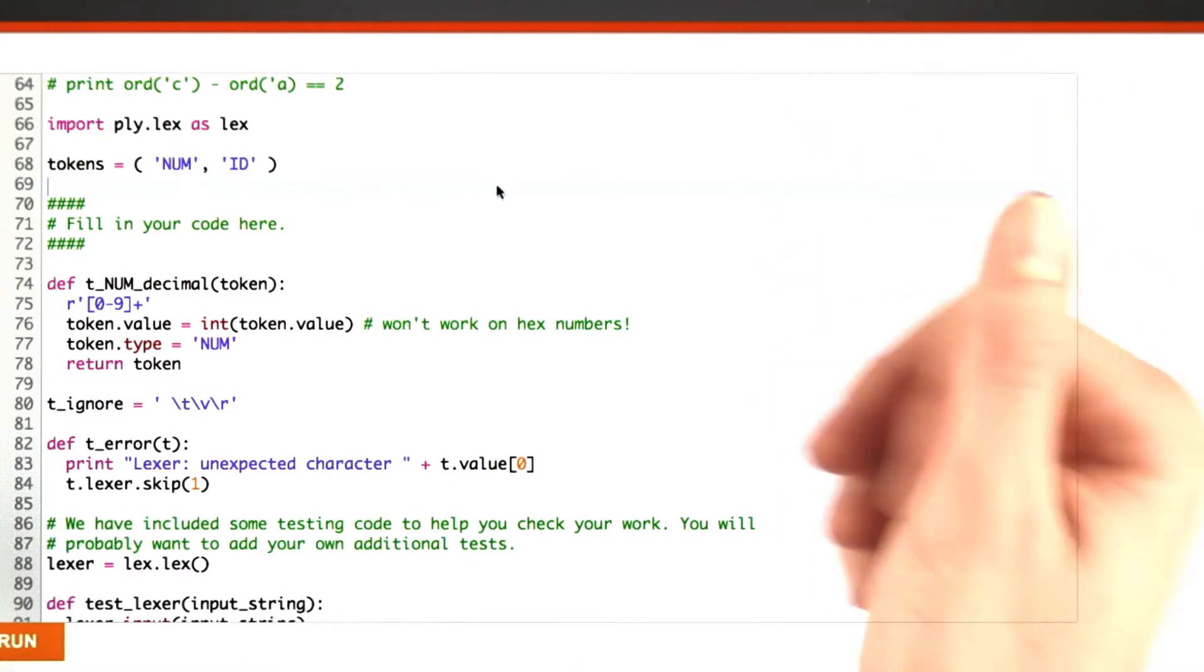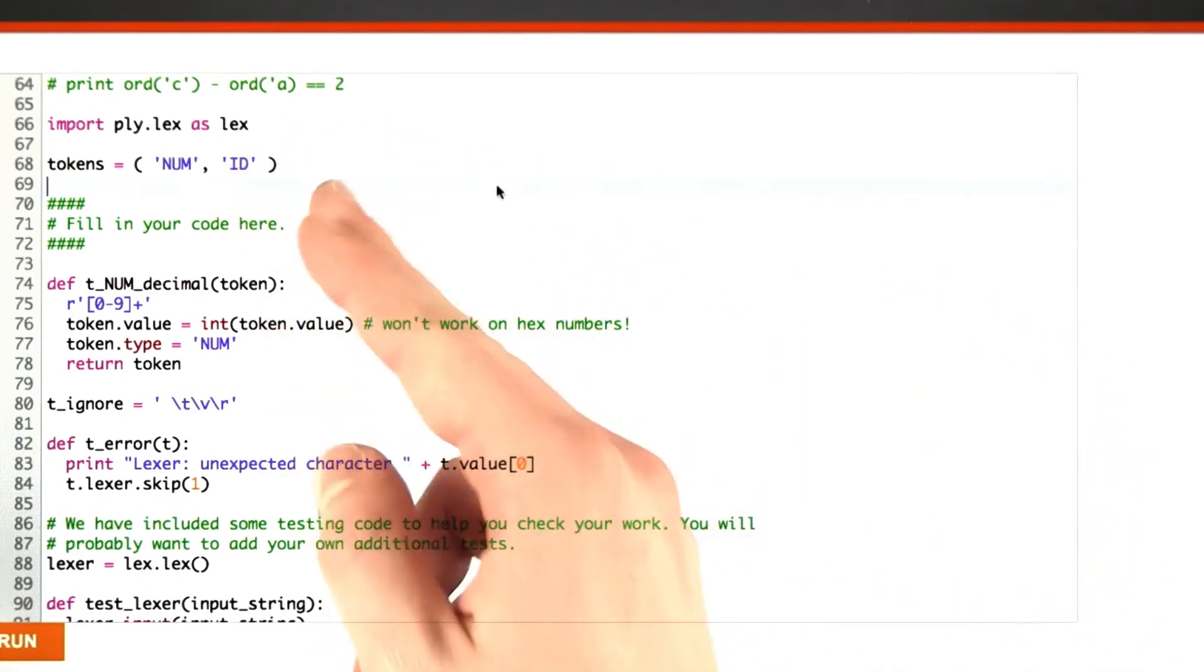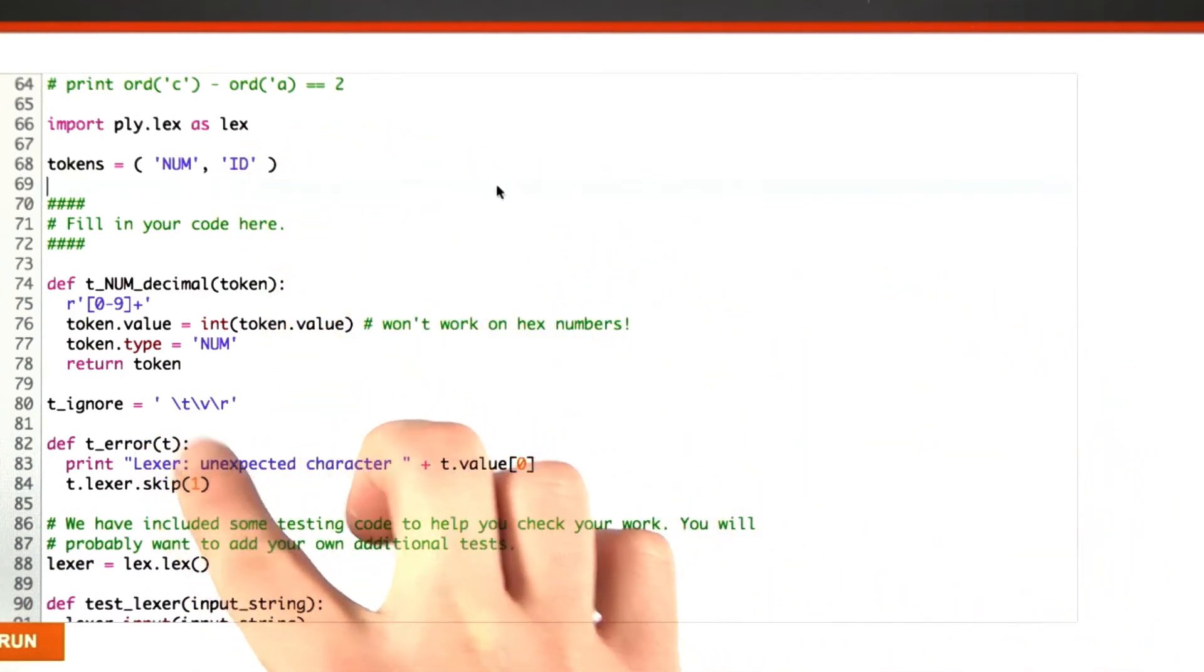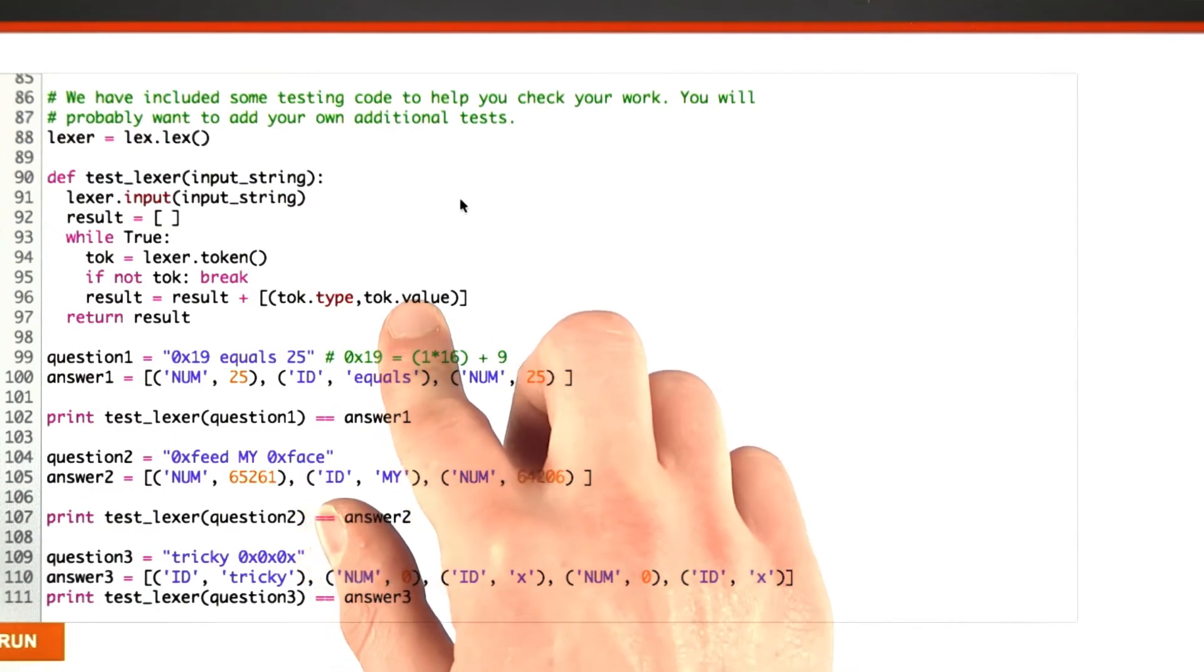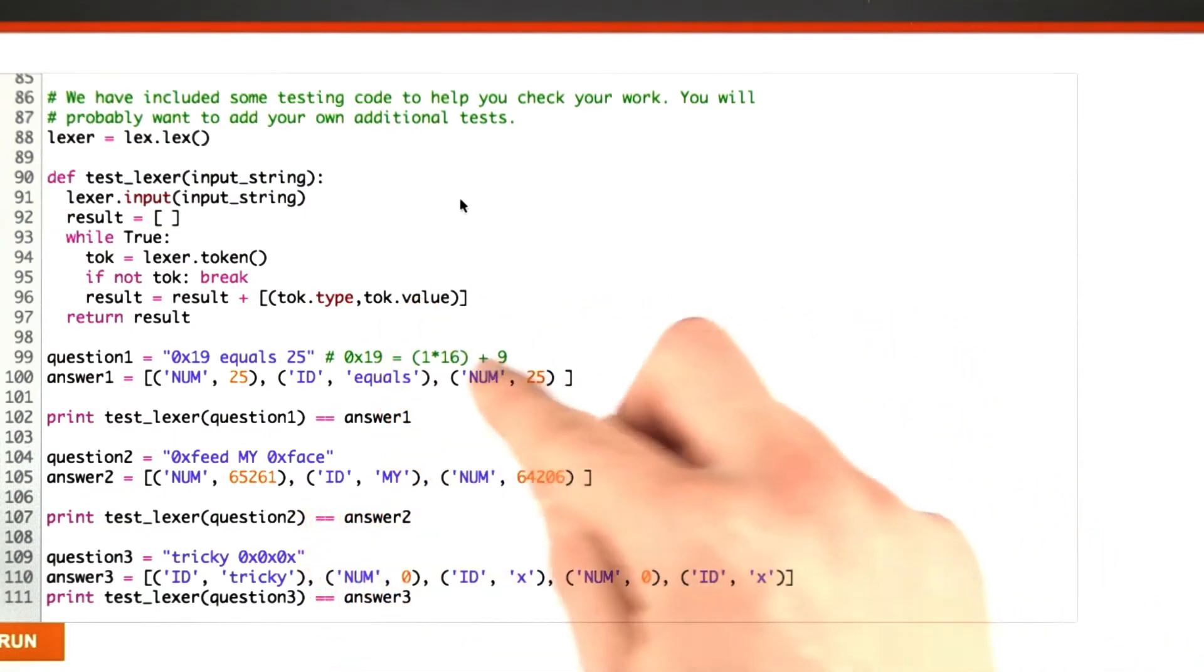We have two types of NUMs. One is a decimal number, and the other is going to be the hexadecimal number, which we have to write. We ignore spaces, tabs, returns, et cetera, and we throw an error when there's something we don't understand. We have some code that runs our lexer for the sake of testing, and then we have some test cases.